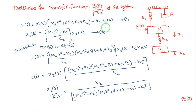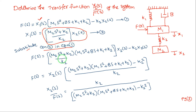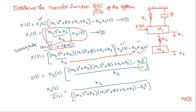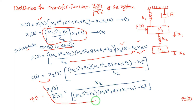To find X2(s)/F(s), eliminate X1(s) by substituting Equation 2 into Equation 1 in place of X1(s). After substitution, take X2(s) as the common term and compute the LCM, giving k2² terms. The final transfer function X2(s)/F(s) equals k2 divided by the total resulting expression. This is the answer.